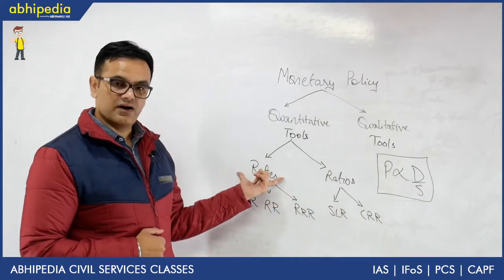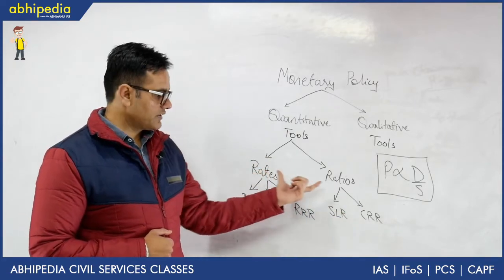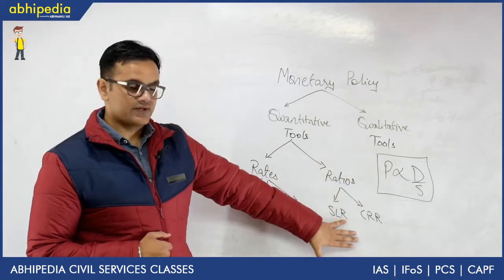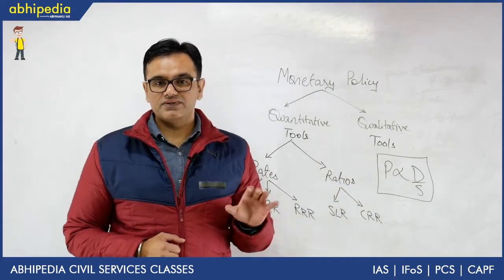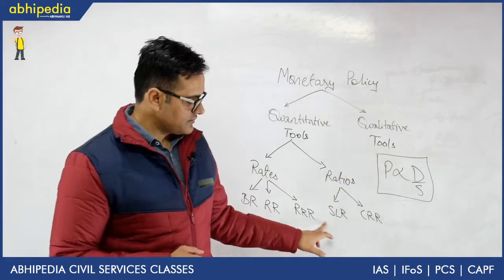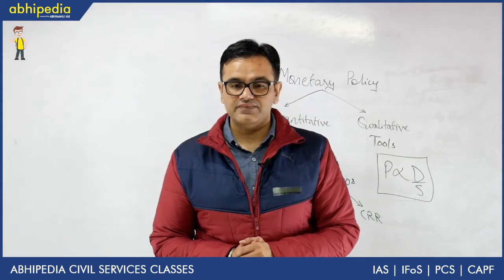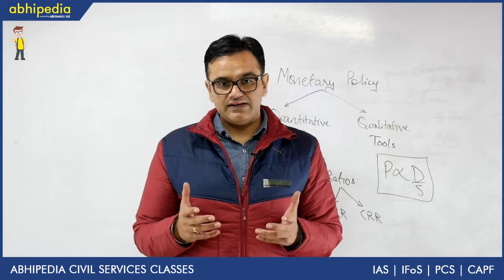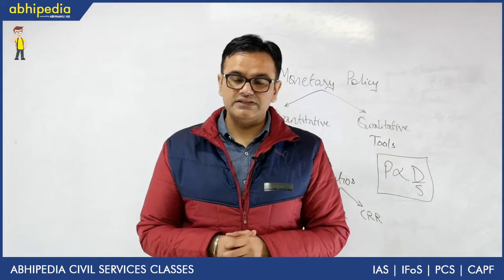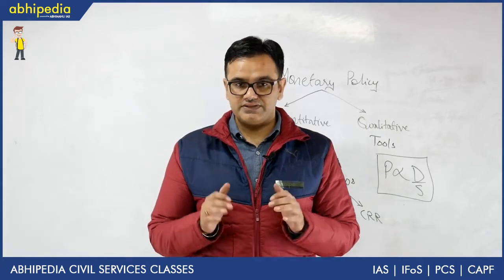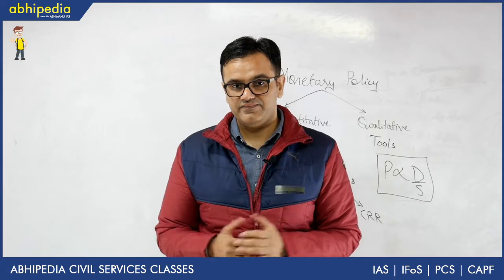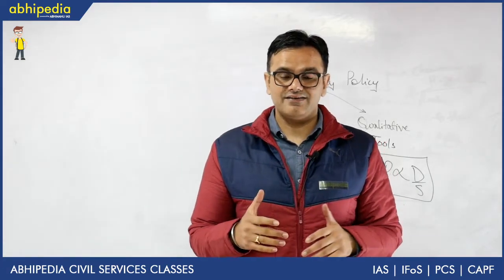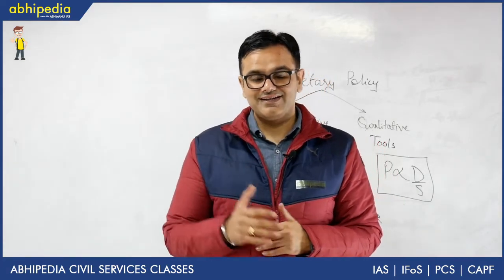One will control the demand of money and one will control the supply of money. Starting with ratios — the first one is SLR, that is Statutory Liquidity Ratio. This is essentially the amount of NDTL — Net Demand and Time Liabilities — in terms of percentage that a bank must keep with itself at all times.